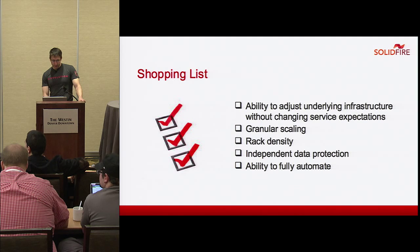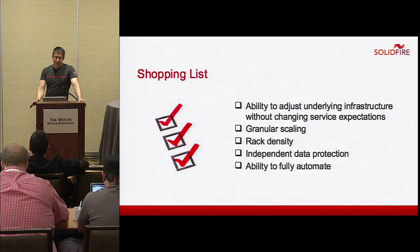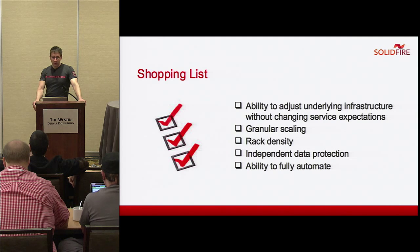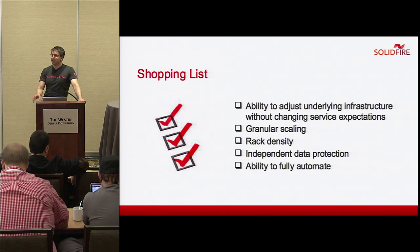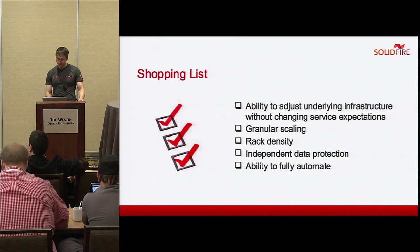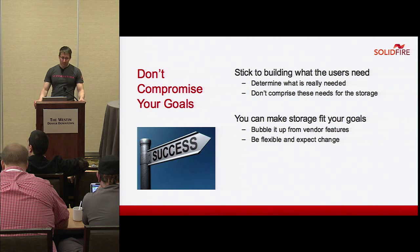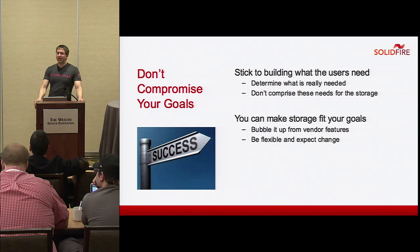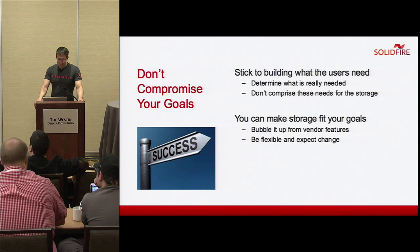In summary: we want the ability to adjust the underlying infrastructure without changing service expectations — CloudStack's storage tagging handles this well and is improving with each release. Granular independent scaling of both storage and compute, green rack-dense storage for cost savings, independent data protection, and fully automating everything. The bottom line: don't compromise your goals. Stick to what users actually need, and try to get their real requirements rather than jumping to a technical implementation. I'm a couple of minutes over, so grab me at the SolidFire booth. Thanks for listening.